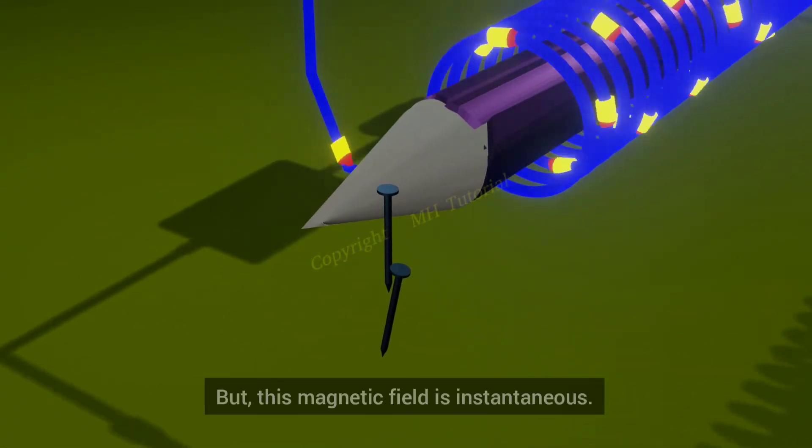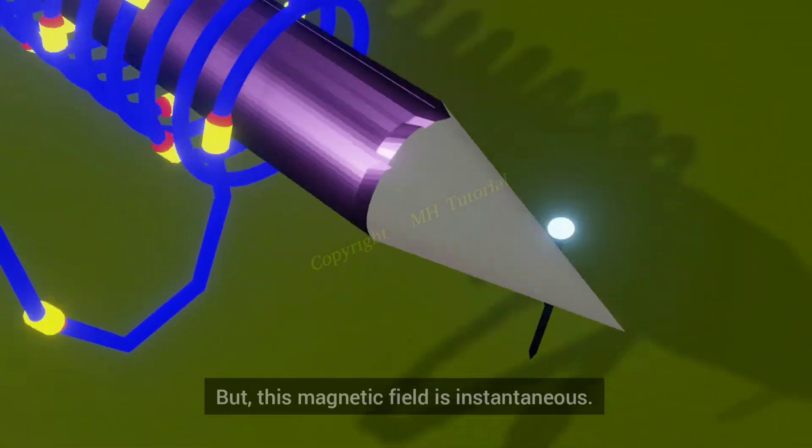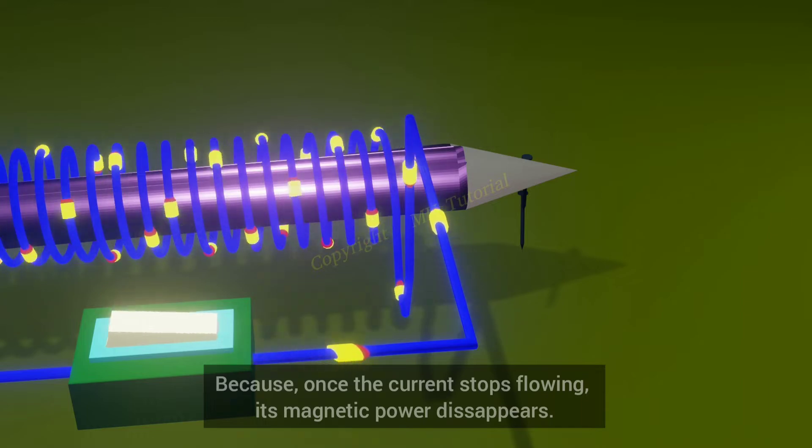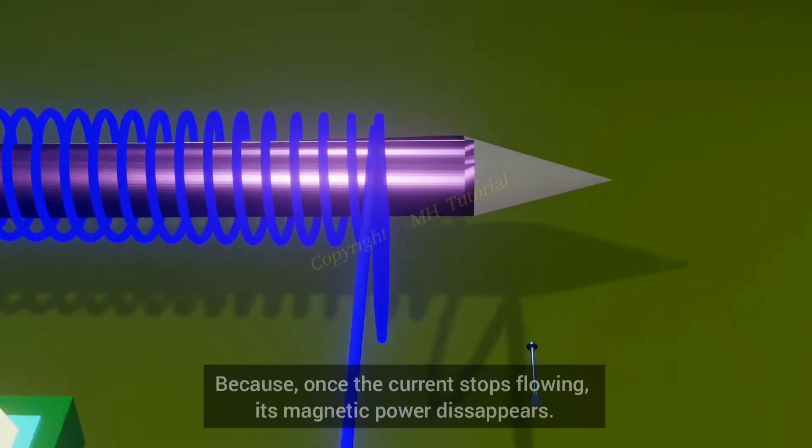But this magnetic field is instantaneous. Because once the current stops flowing, its magnetic power disappears.